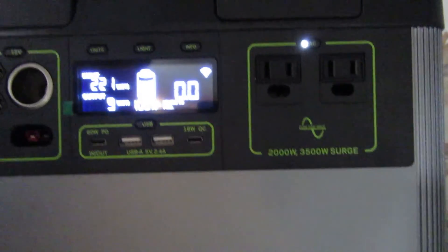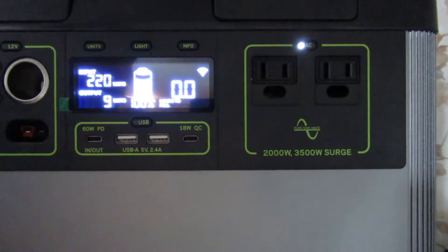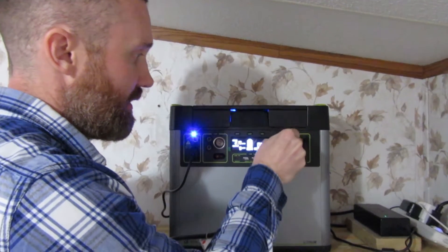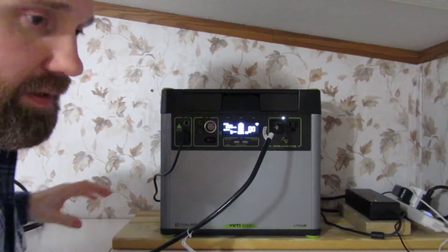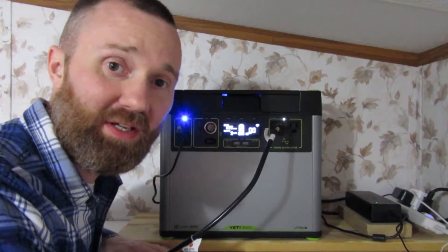And then all we have to do is get the extension cord and plug it into the home integration kit. So we just plug it into the outlet here, and this is on top of a cabinet inside of our kitchen.